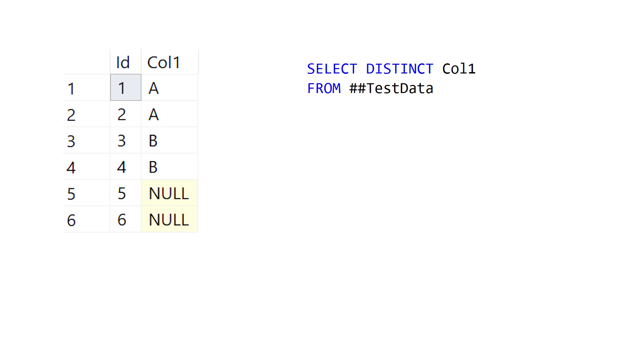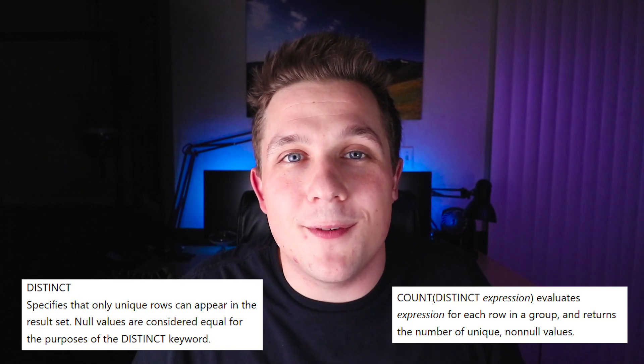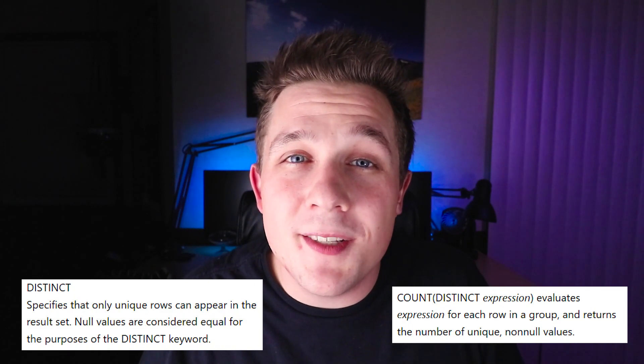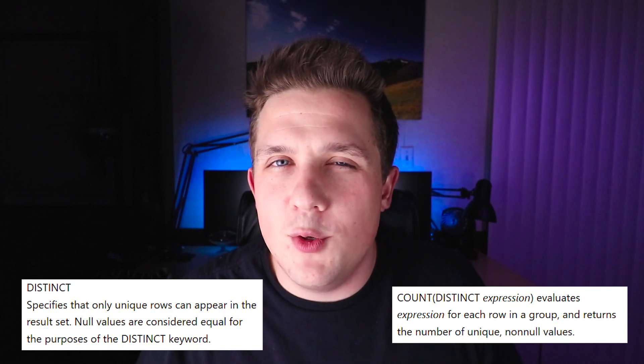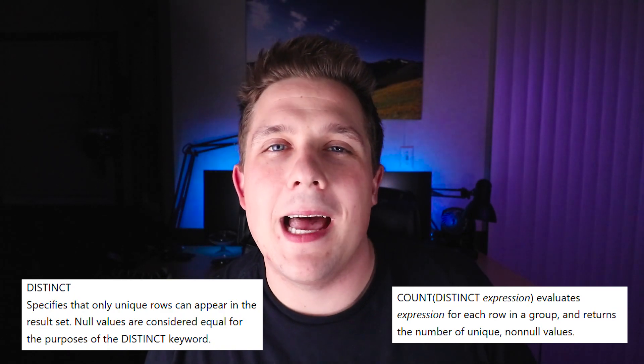The interesting thing here is that instead of getting just two rows of data back, we actually get three. We have A, B, and a null. And while this discrepancy between two versus three values is clearly explained in the SQL Server documentation, there may be times where you would want this logic to match up. Let's take a look at how we can accomplish that.